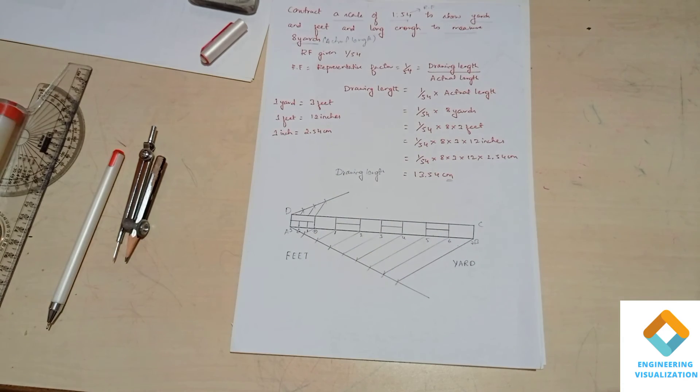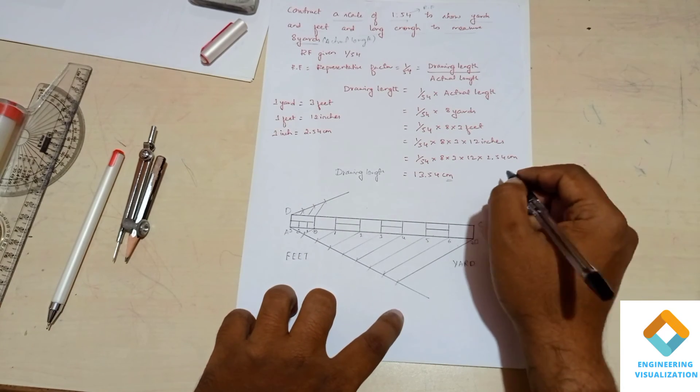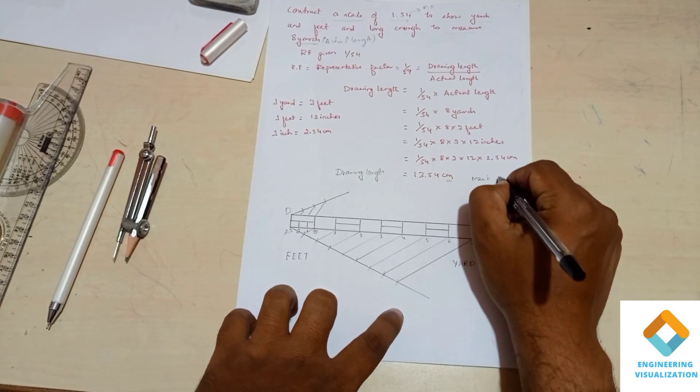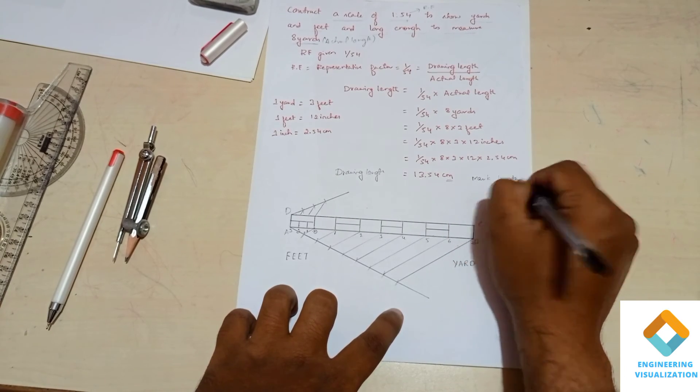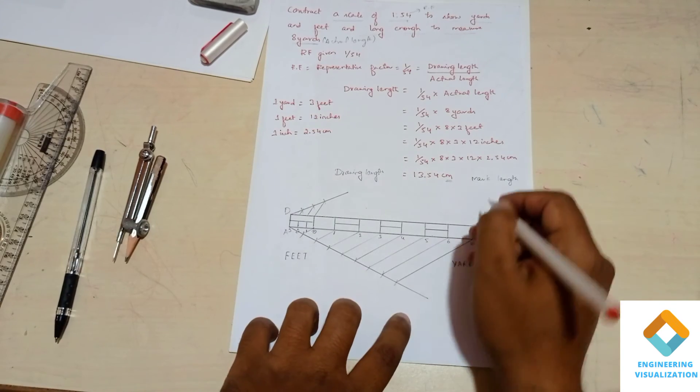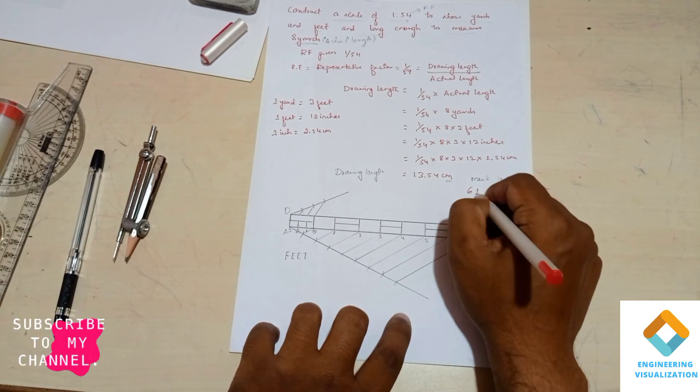Now we can measure any length which we want to measure here. I'm going to measure one mark here length, that will be six yard two feet. We can take that as an example.